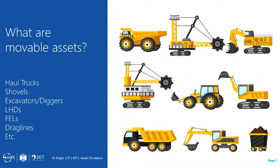The first step in the load and haul cycle is when material gets loaded at a bench or working phase of the mine into the haul trucks. This is typically done by excavators, or in some instances LHDs, FELs, or directly from drag lines.